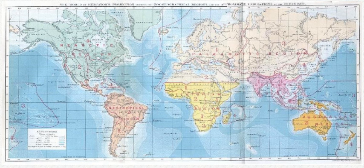As writer David Quammen put it, 'Biogeography does more than ask which species? And where? It also asks why? And, what is sometimes more crucial, why not?' Modern biogeography often employs the use of geographic information systems to understand the factors affecting organism distribution, and to predict future trends in organism distribution.